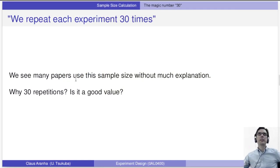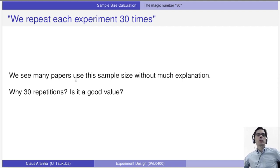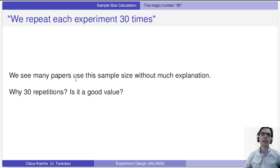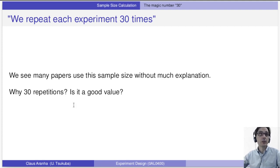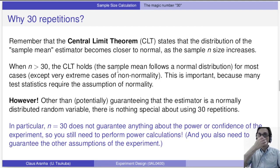When we think about how many observations we need in our sample, a lot of students think we should repeat each experiment 30 times and that's it. We also see many papers use this sample size without much explanation. Why 30? Is 30 a magic number? Is it a good value?